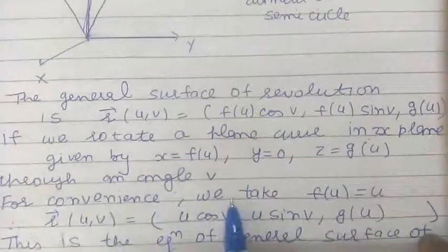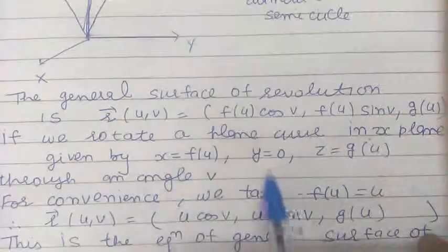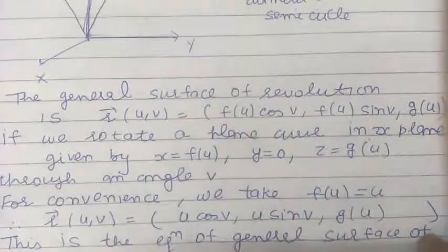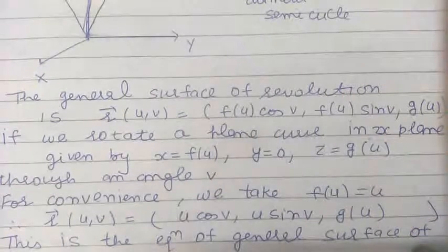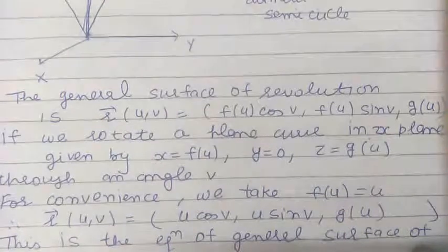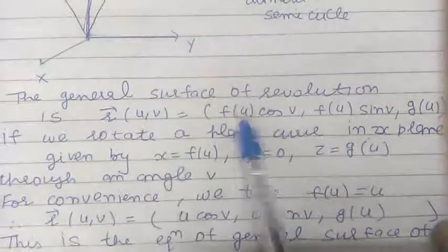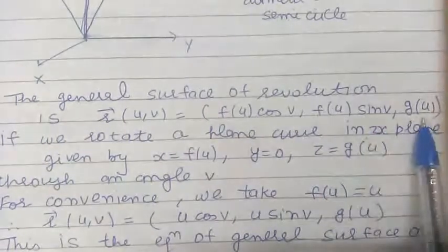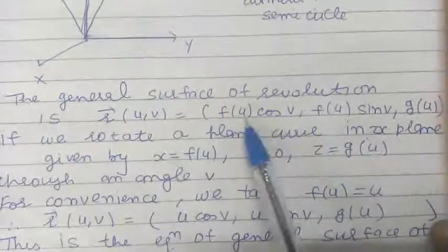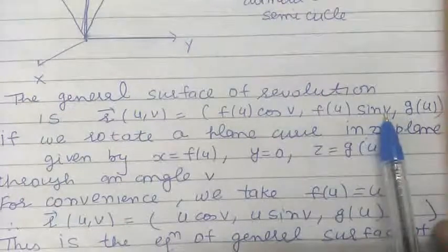Let us rotate this plane curve through an angle v about the z axis. This plane curve is rotated. In that case, we get the new surface of revolution which has the coordinates given by f(u)cos(v), f(u)sin(v), g(u). This is the general equation for the general surface of revolution.